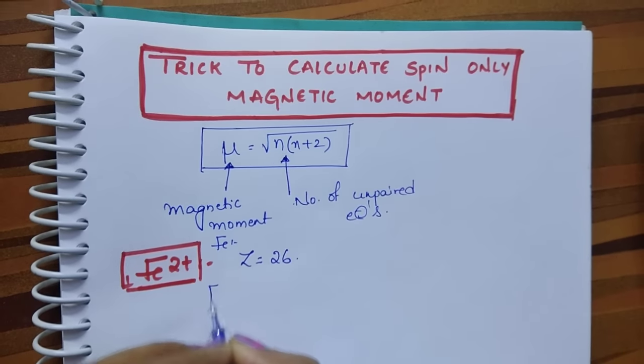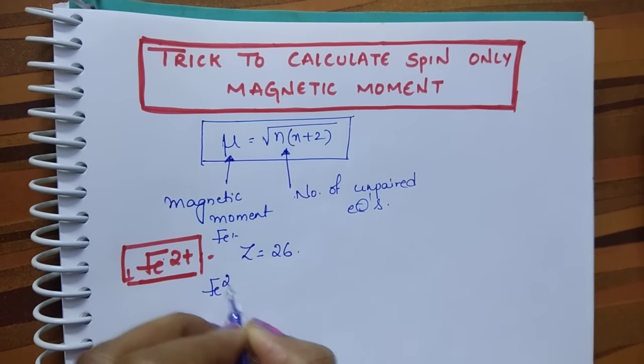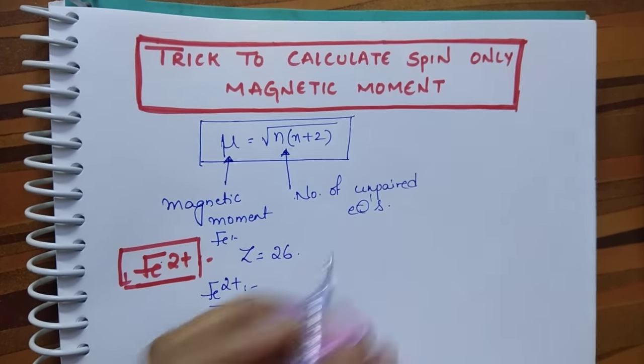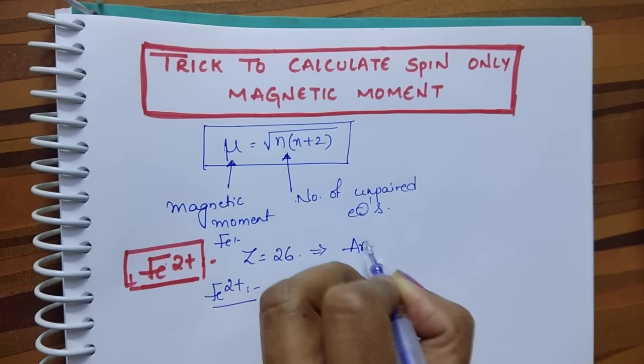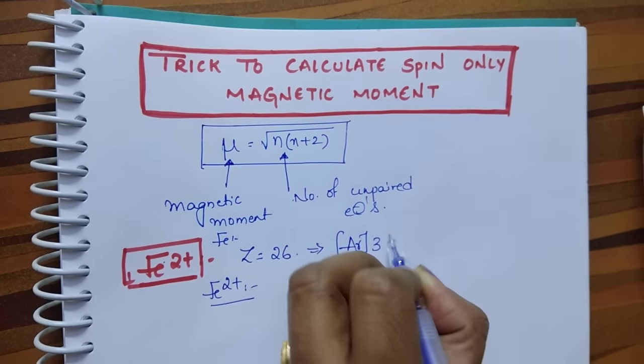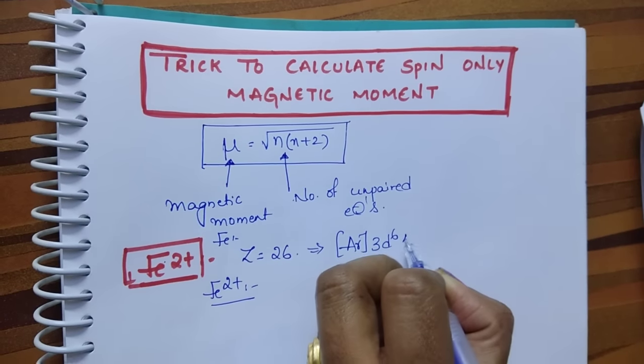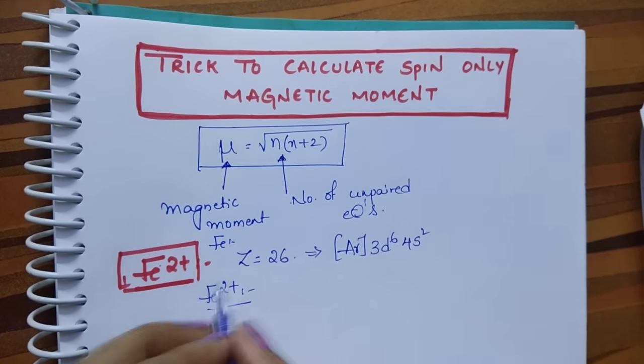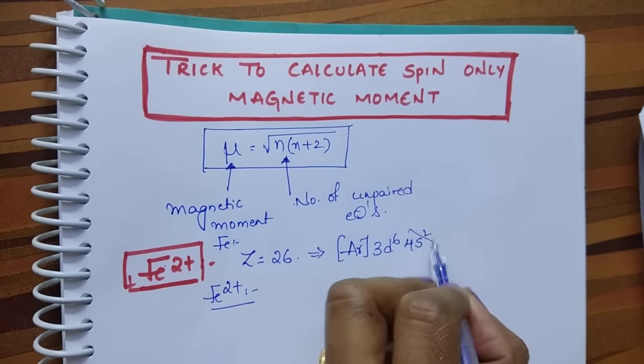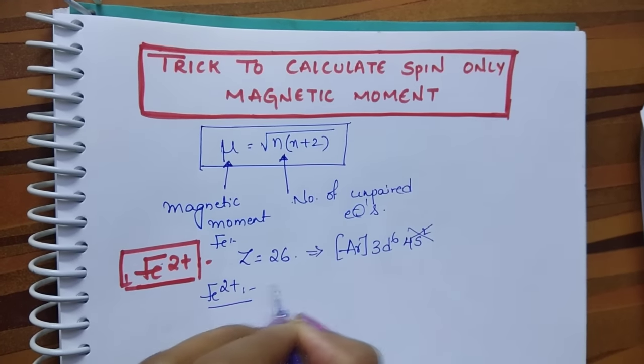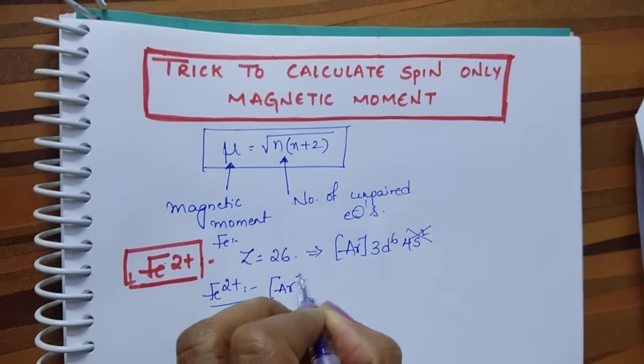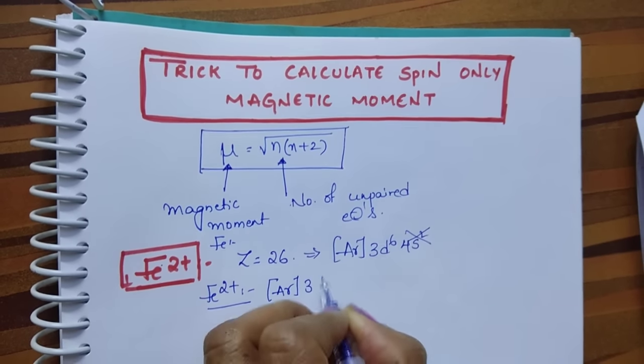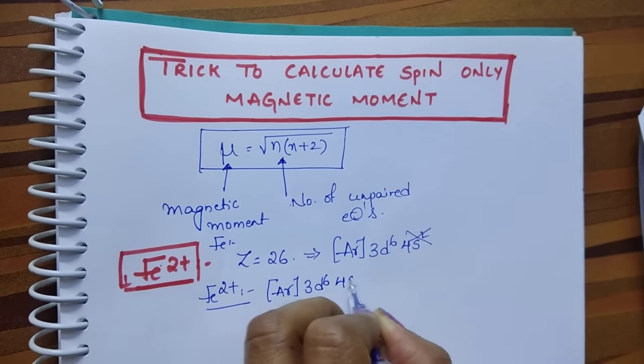It is in the +2 state. First, write the electronic configuration of Fe: Argon 3d⁶ 4s². It is in +2 state, so remove these 2 electrons. Then its electronic configuration is Argon 3d⁶ 4s⁰.